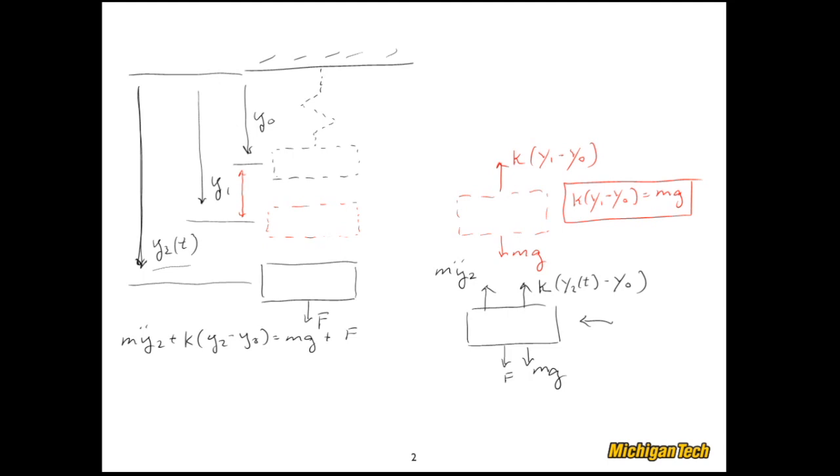Now what I'll do is I'll resolve out this mg. I'm going to take that mg and stuff it right into there. So I get m y2 double dot plus k times y2 minus y0 equals k times y1 minus y0 plus f. So if I stare at this equation for a minute, I can see a couple of nice things happen.